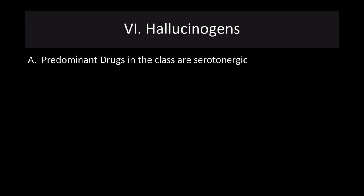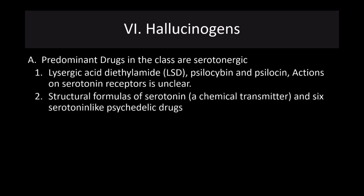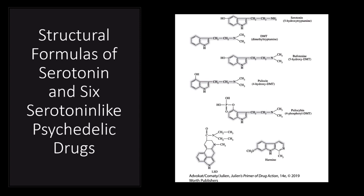The predominant drugs in the hallucinogen class are all serotonergic. Lysergic acid diethylamide is LSD. Psilocybin and psilocin are related compounds. Their actions on serotonin receptors are not entirely clear, but the structural formulas of serotonin and serotonin-like psychedelic drugs show they are fairly similar. Looking at these compounds, at the top we have serotonin, then DMT, another psychedelic, and psilocybin and LSD toward the bottom — progressively different variations of the 5-HT molecule, with pretty solid evidence that these are serotonergic.